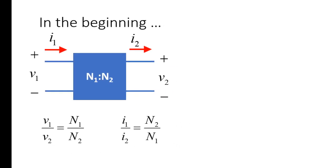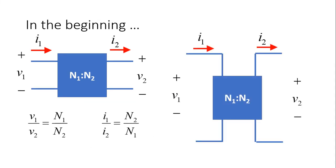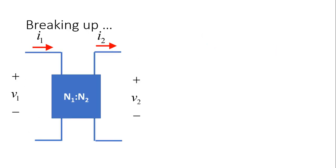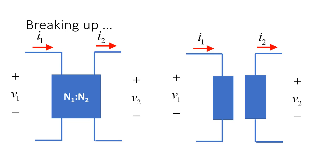Another way of representing that ideal transformer could be this one. The point now is that the close association suggested by that box is broken. In reality, in a circuit, we will connect the first port in one part of the circuit and the second port can be connected somewhere else. The voltages and currents are still related by the formulas we saw before, but now we represent them such that we can move them apart.